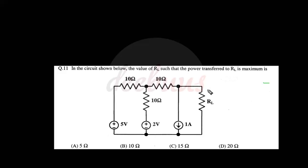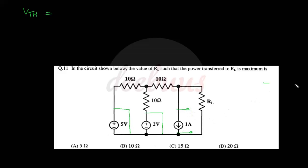One more question: in the circuit, the value of RL such that the power transferred to RL is maximum — we have to find the value of RL for maximum power transfer. RL equals the Thevenin resistance. For calculating Thevenin resistance, we have to deactivate the sources: short-circuit the voltage source and open-circuit the current source.